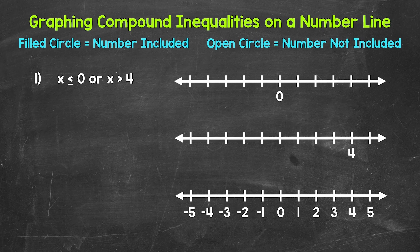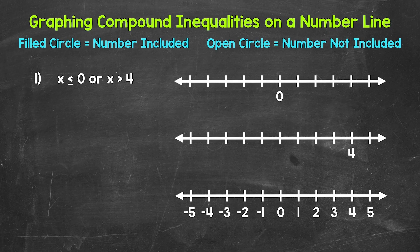Let's jump into number one where we have x is less than or equal to zero, or x is greater than four. So x has to be less than or equal to zero, or x has to be greater than four. A solution of a compound inequality involving or is anything that makes either inequality true — this must be true or that must be true. Now let's graph this on a number line.